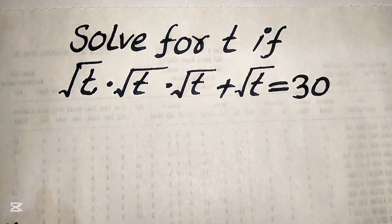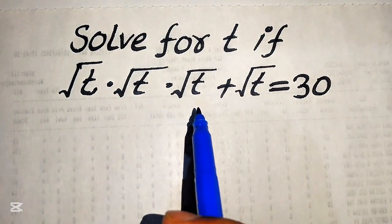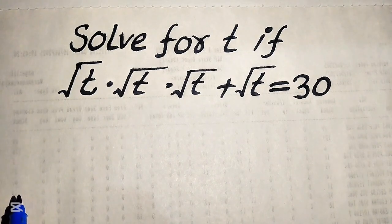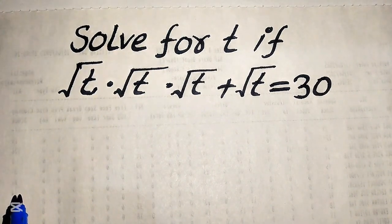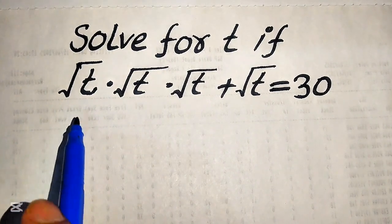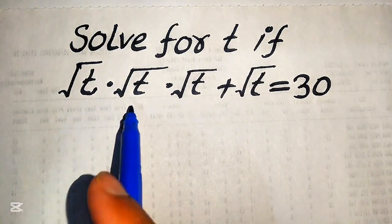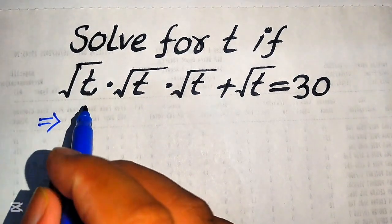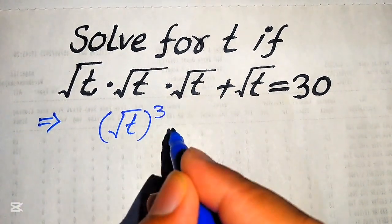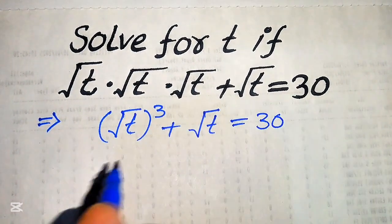Hello everyone, today I want to show you how to solve this problem: for the values of t, if we have square root of t multiplied by square root of t multiplied by square root of t, plus square root of 2t, equals 30. We solve this problem for the values of t, and I hope you like this method. If you have any other method in mind, please don't hesitate to write it in the comment section.